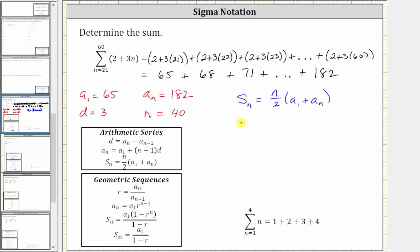So the partial sum of the first 40 terms of the arithmetic series is equal to n divided by two which is 40 divided by two times the quantity a sub one plus a sub n where a sub one is 65 and a sub n which is really a sub 40 is 182. So we have 65 plus 182.